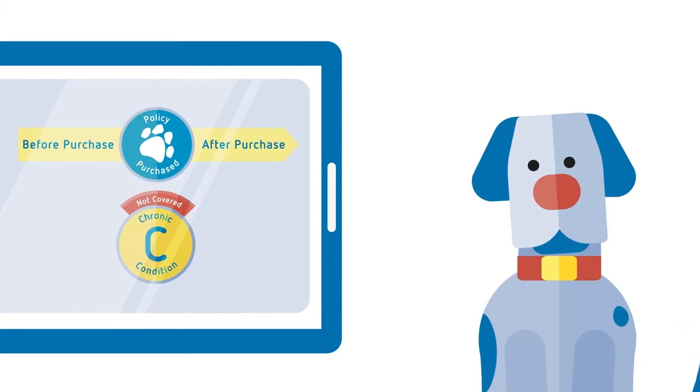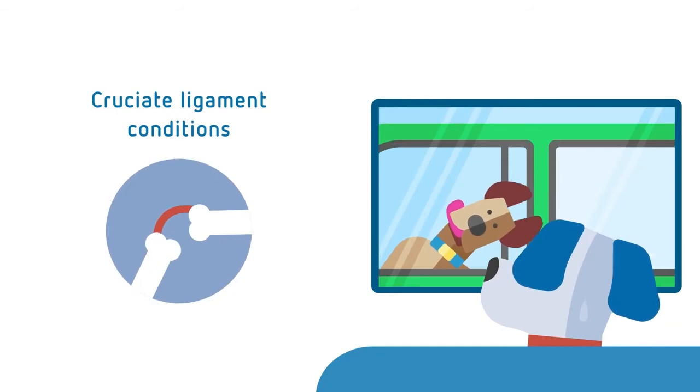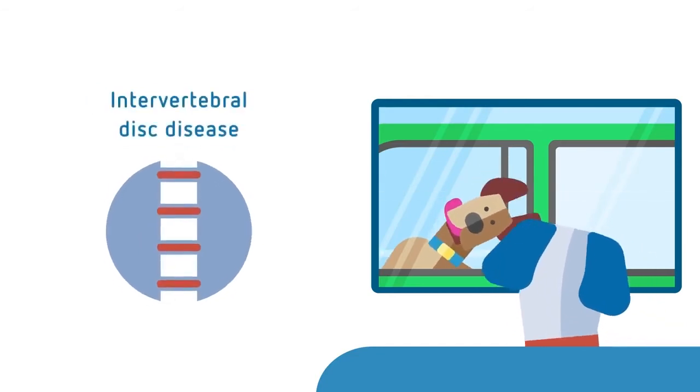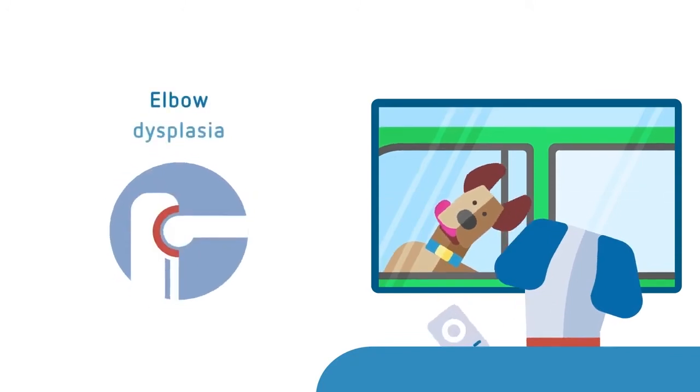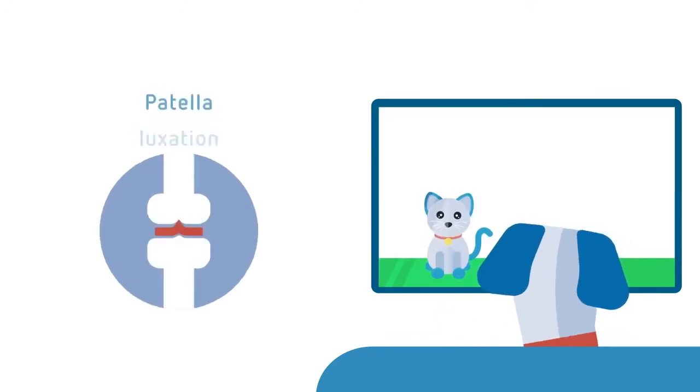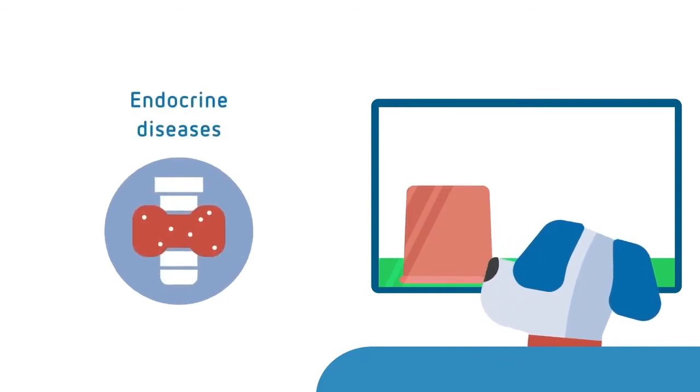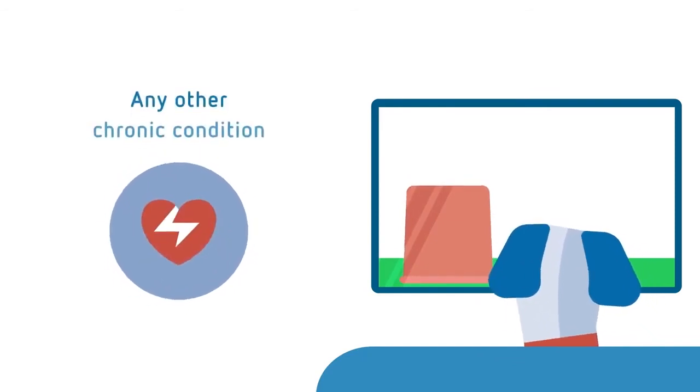Some of these conditions include cruciate ligament conditions, intervertebral disc disease, hip dysplasia, elbow dysplasia, patellar luxation, endocrine diseases, and any other chronic condition.